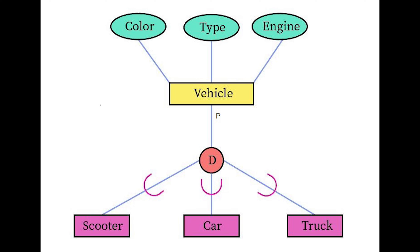Specialization can be further qualified by disjointness and completeness constraints. Disjointness specifies what subclasses an entity of the superclass can belong to, while the completeness constraint indicates whether all entities of the superclass should belong to one of the subclasses or not. The entity at the very top is the superclass, and anything that falls under it will be a subclass.